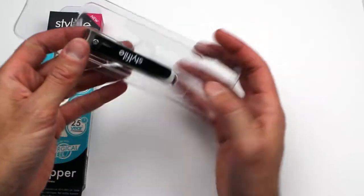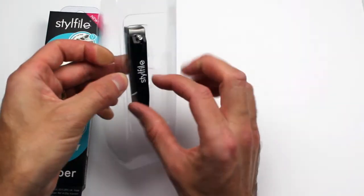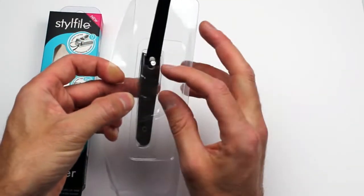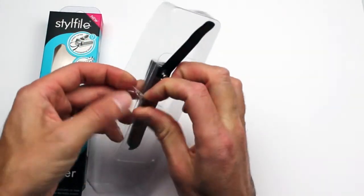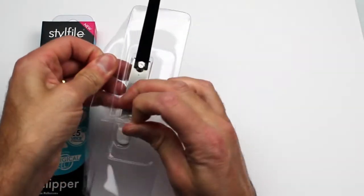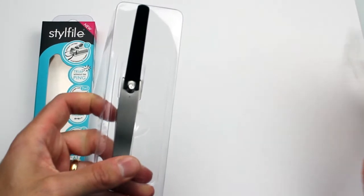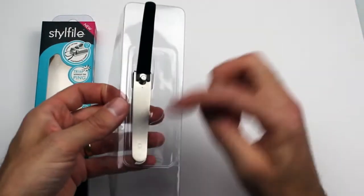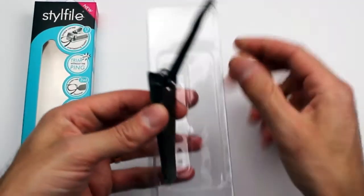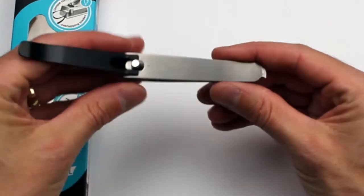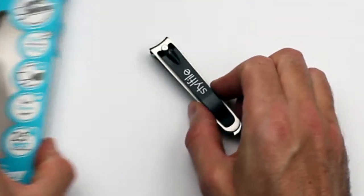Once that's open you can open the box and you've still got that box. With the Stylfile Clipper 2 we've had to hold it in place a little bit better, so next thing you'll want to do is just pull that away and discard that bit, and then you've still got this tray. Here is the Stylfile Clipper 2.